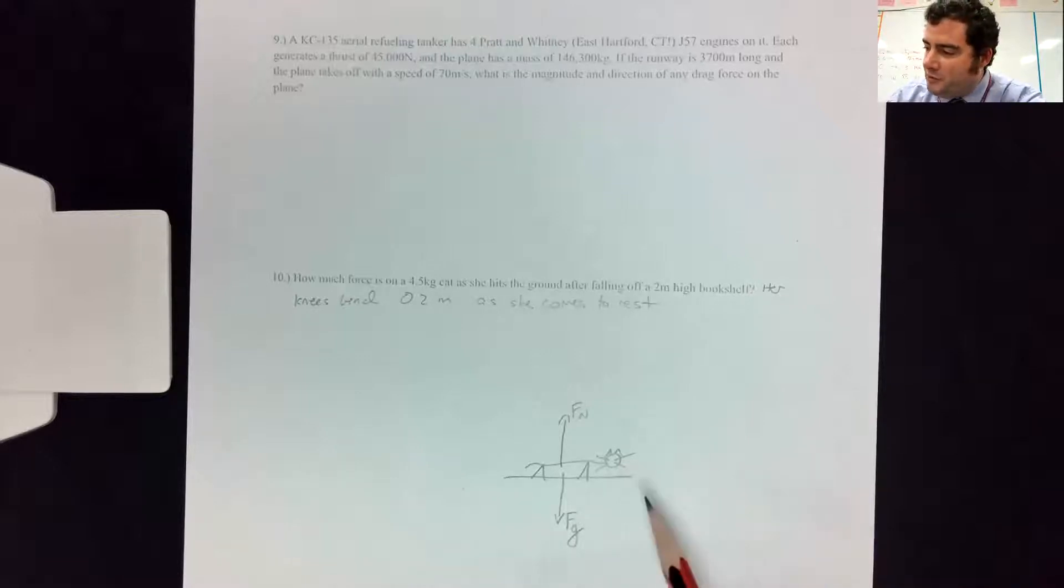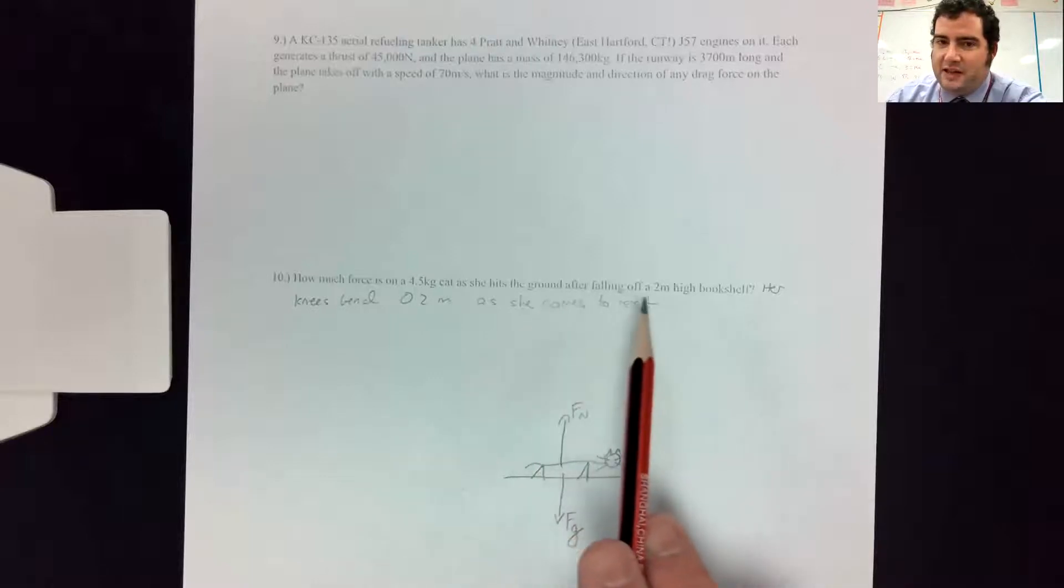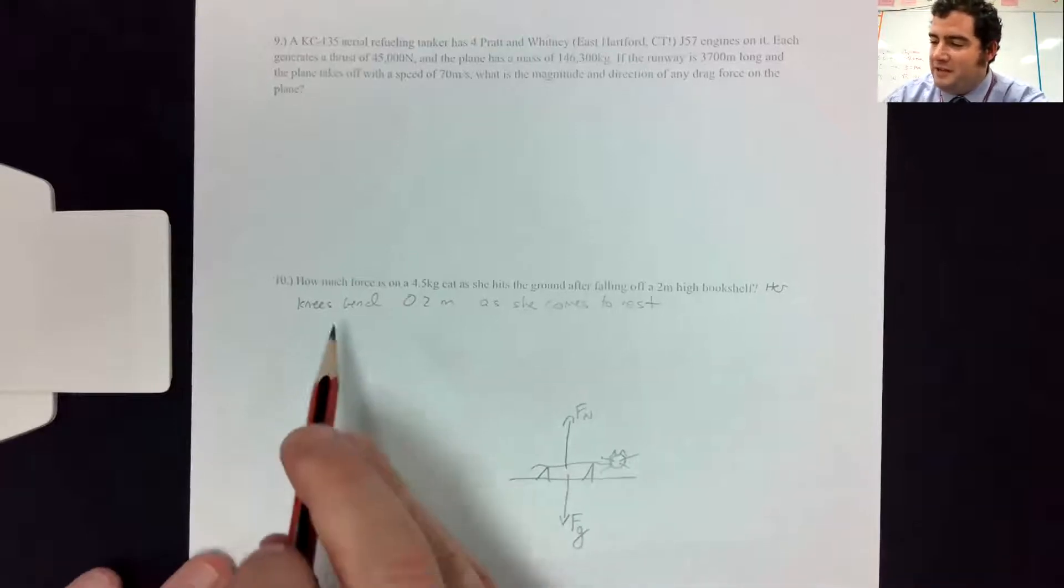But in order for you to do a motion equation to get that, you actually need to know how fast the cat is going when she hits the ground. And instead of telling you that, I just said she fell off a two meter high bookshelf. So it's like before you even can do this problem, you had to do another problem.